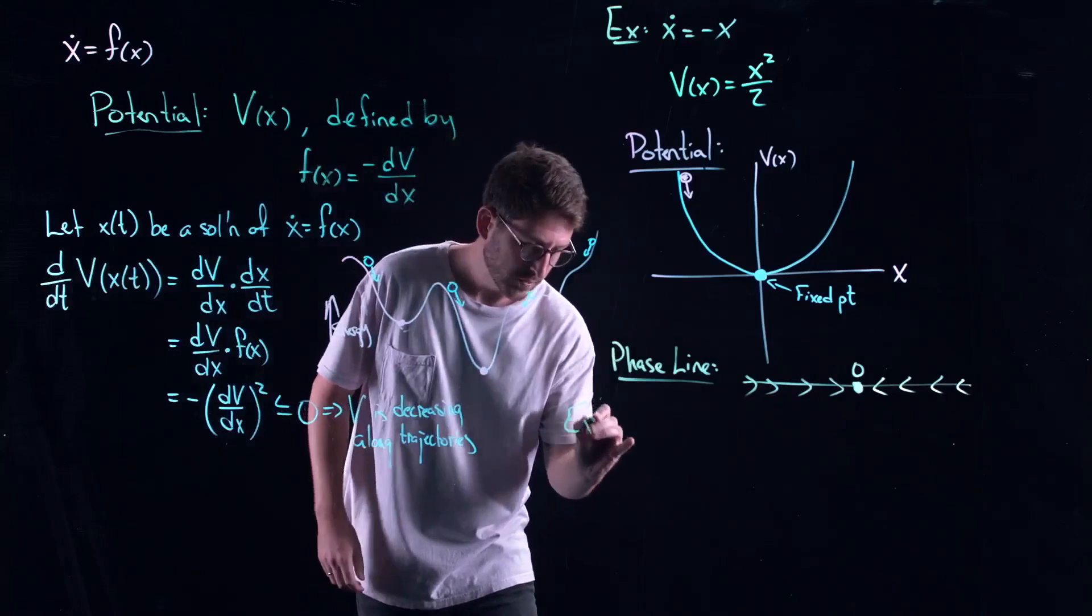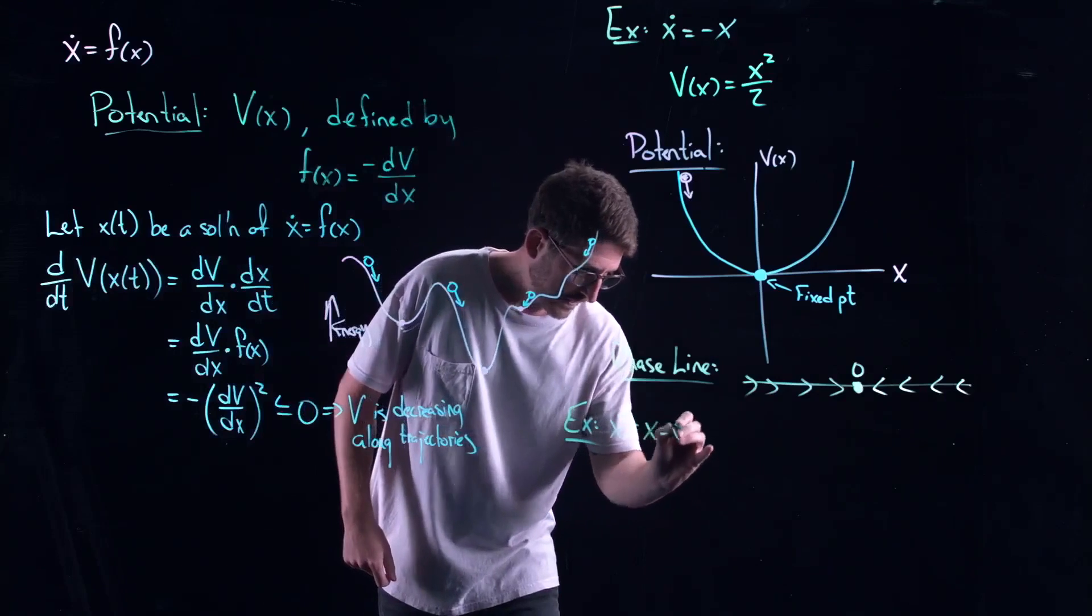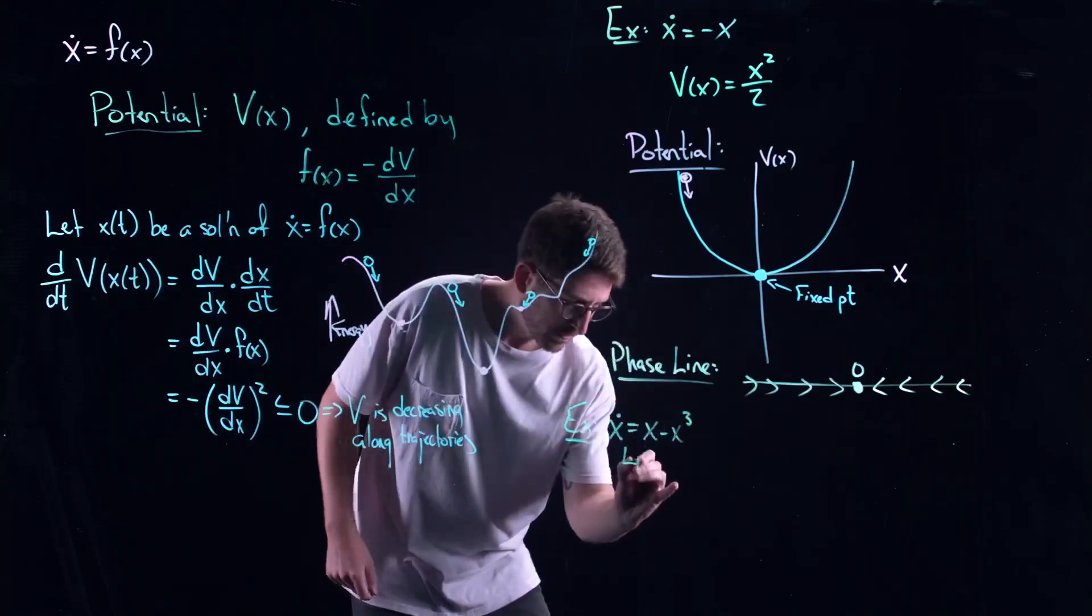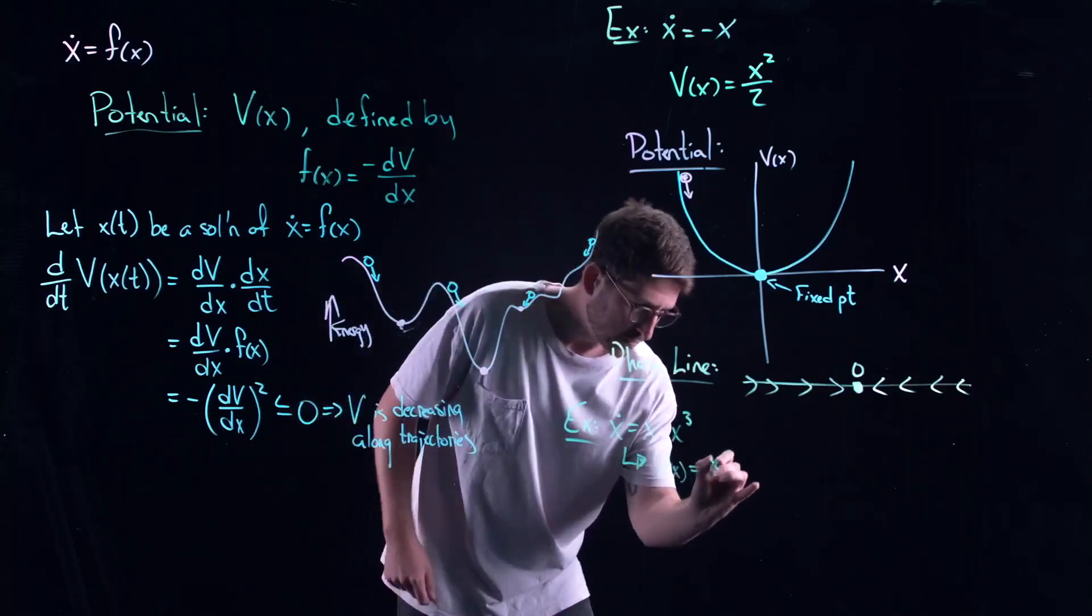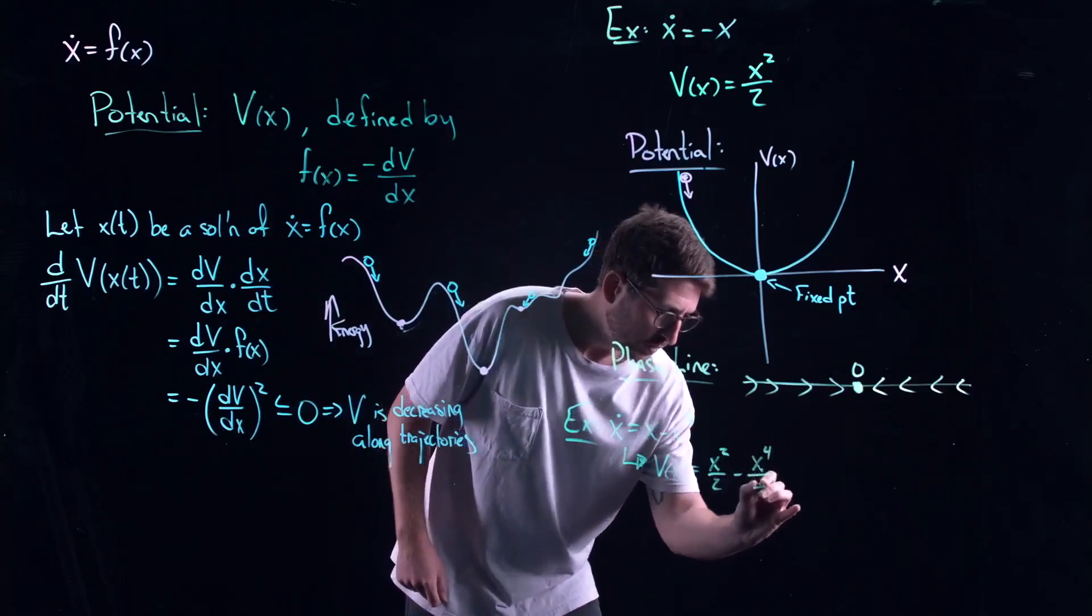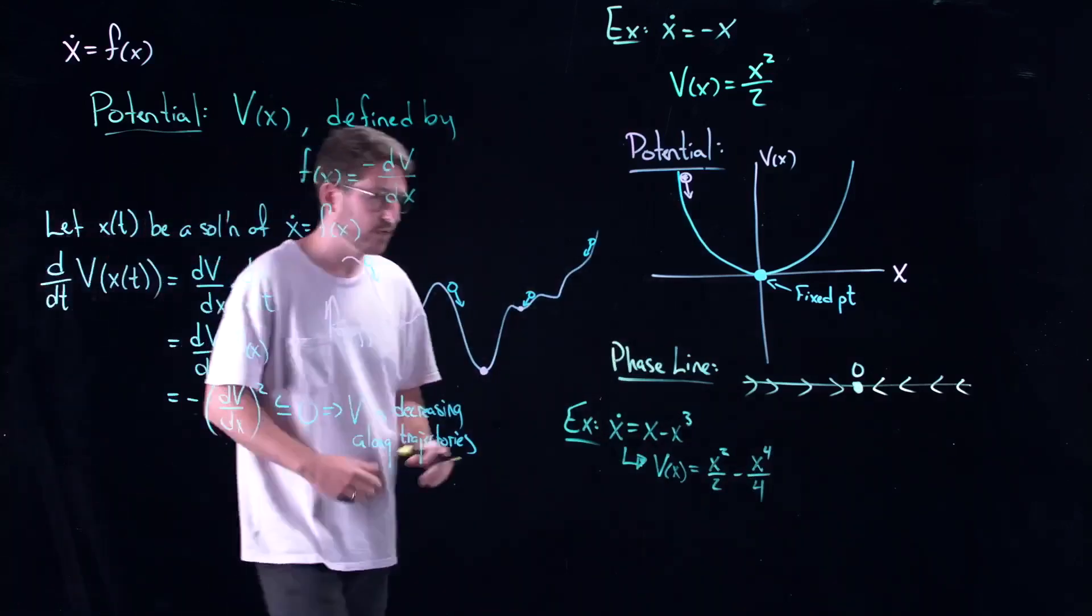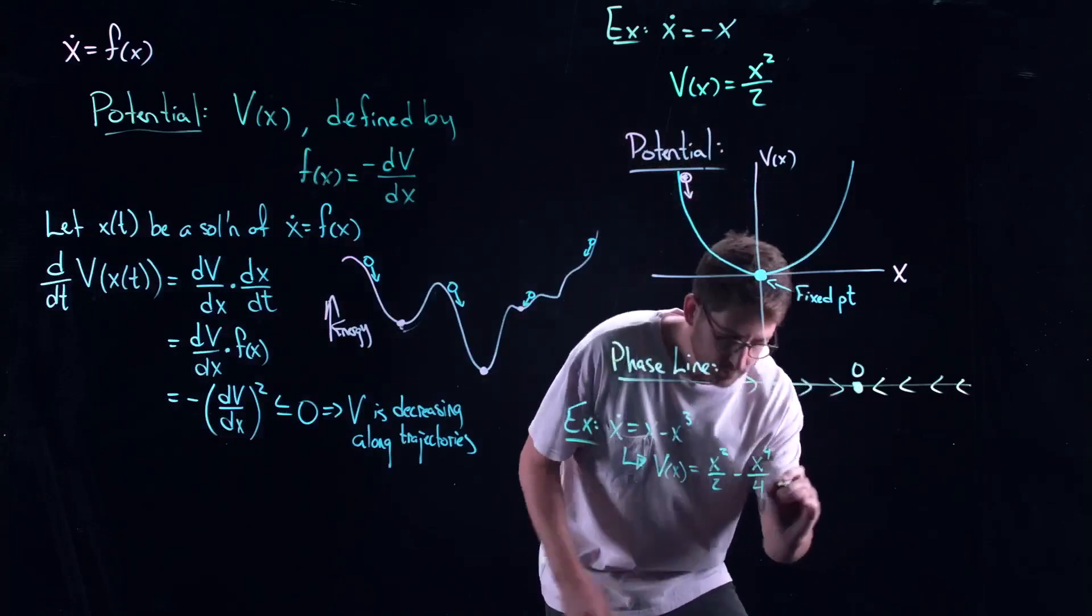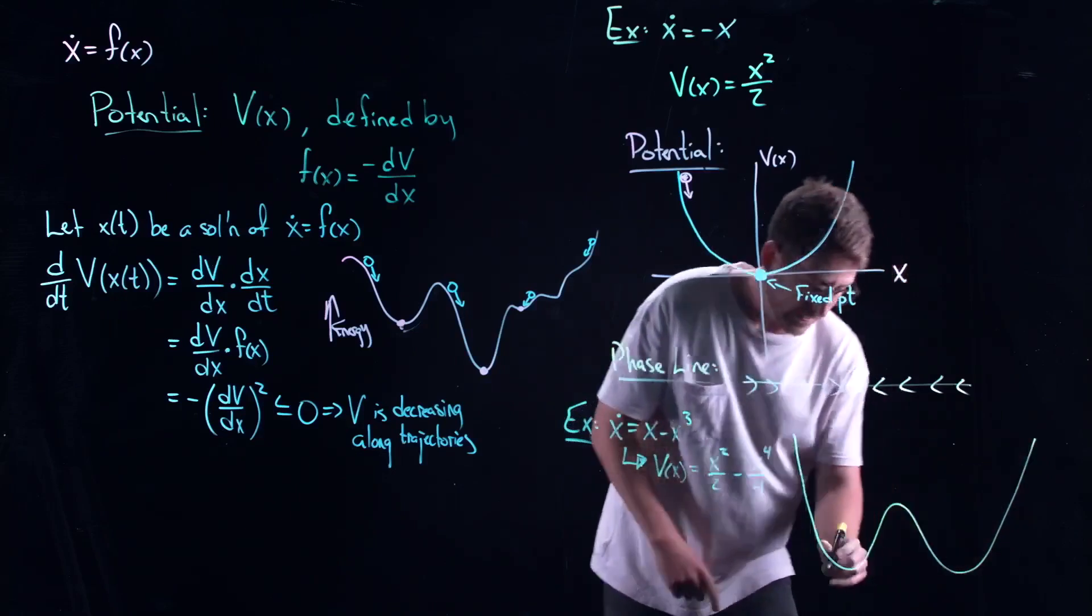Let me give you one more example that's kind of fun. X minus X cubed. So in this case all you need to do is take an anti-derivative to get the potential. I get X squared over 2 minus X to the 4 over 4. Again no constant of integration is necessary here.